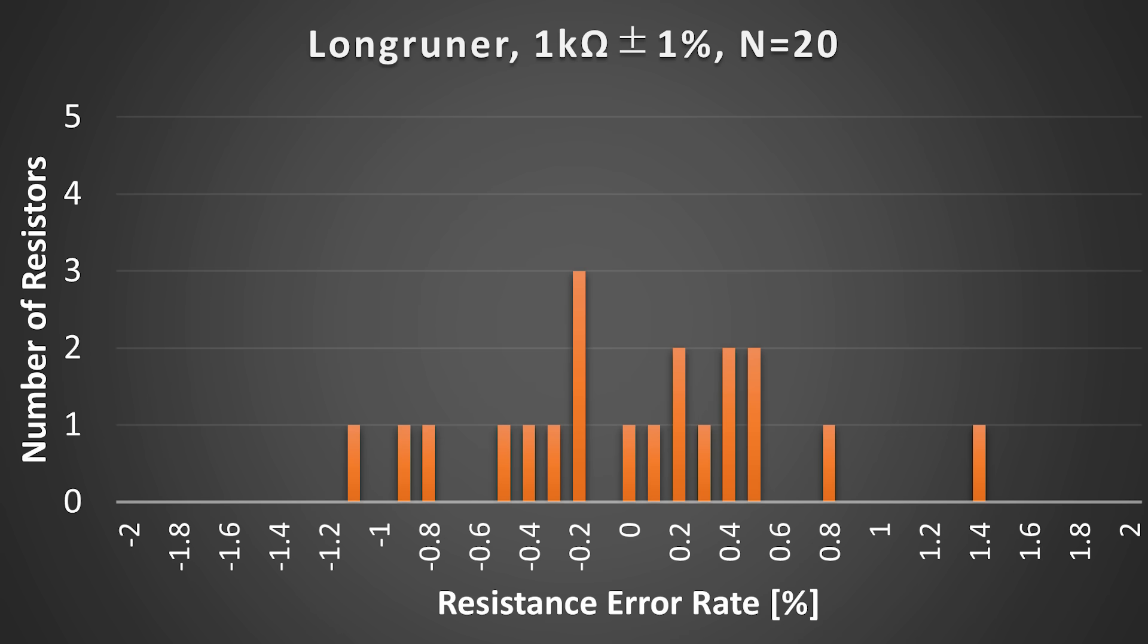Next, we'll look at Longruner. We only have 20 samples at hand, even fewer than Elegoo. I measured the resistance values, and they are not in the range of plus or minus 1%. The rated tolerance is 1%, but there were resistors with higher error rates. Also, the values vary a lot. The graph doesn't form a normal distribution shape. I had only 20 samples, so I can't say this for sure, but Longruner doesn't seem to be stable in quality.